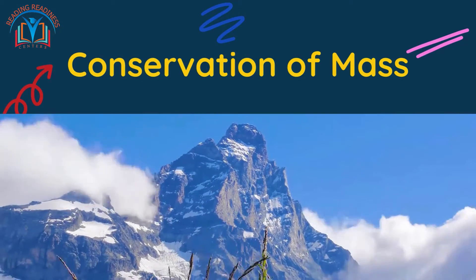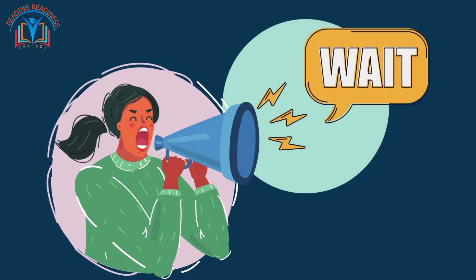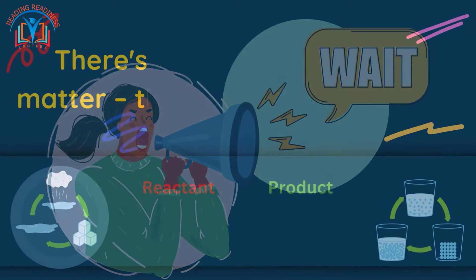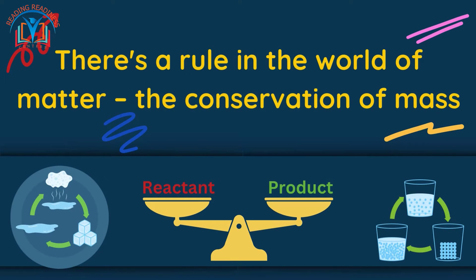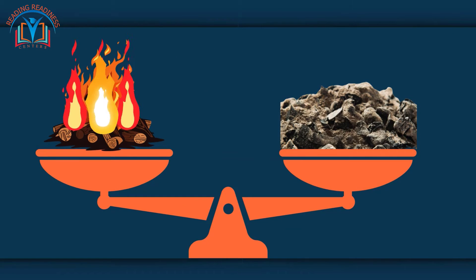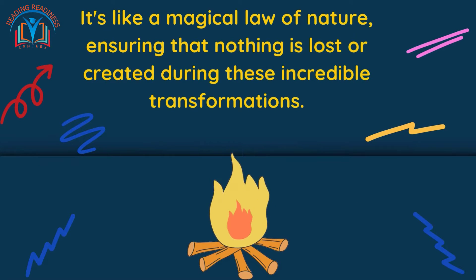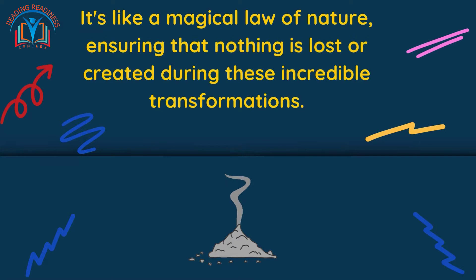Conservation of mass: there's a rule in the world of matter called the conservation of mass. This means that no matter how matter changes, the total mass remains the same. It's like a magical law of nature, ensuring that nothing is lost or created during these incredible transformations.